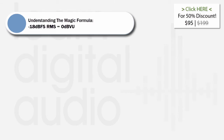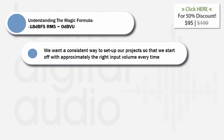In part 1, we established that every Nebula program was different and needs its gain staging set by ear. While this is correct, we still want a consistent way to set up our project so that we start off with approximately the right input volume every time. If you already have some kind of gain staging system in place, then some of this section will be about stuff you already know and practice. Even so, I suggest you check it out to see how gain staging relates to Nebula in particular and compare how you do things now to my proposed system.